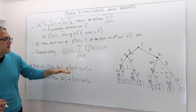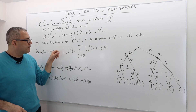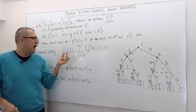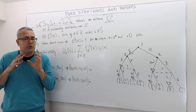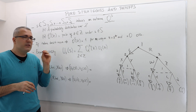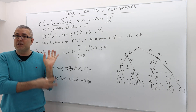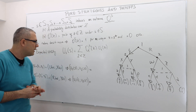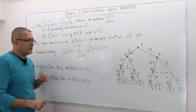Throughout this course I'll use small u for the von Neumann-Morgenstern utility and capital U for the expected utility — they are two different things. But I'm going to abuse the notation for simplification and always use small u. Hopefully you will understand from context whether I'm referring to expected utility or von Neumann-Morgenstern utility. Now let's calculate the expected utility for player one and player two under strategy profile S.